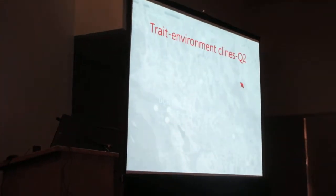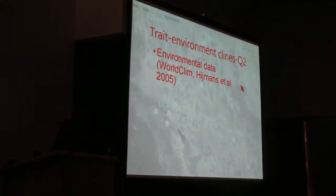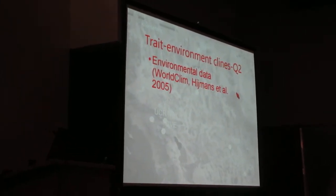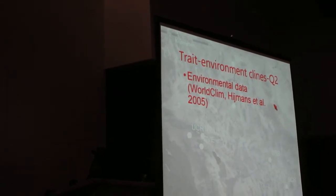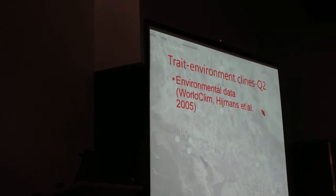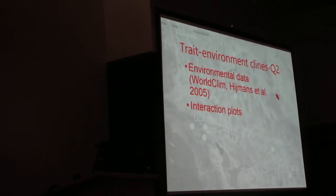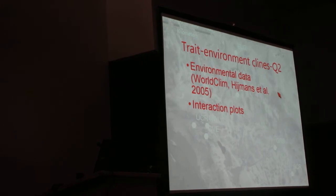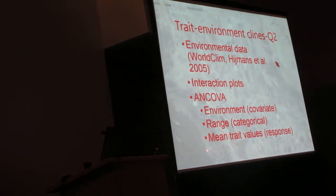To address question two, I constructed these trait-environment clines using bioclim data, worldclim data. I plotted it in GIS, like what Angela did, and extracted a bunch of environmental data using spatial coordinates from my sampling locations. Then I made interaction plots in order to visualize those clines from the native and invasive ranges. I used an ANCOVA approach using environment as a covariate, range as a categorical variable, and trait values as a response.